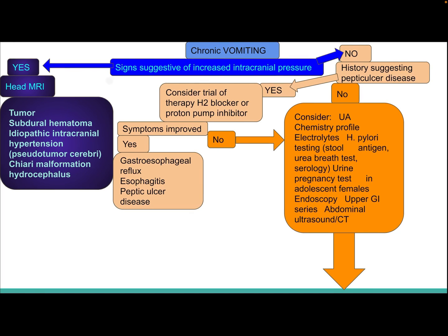For chronic vomiting, if there are signs or symptoms suggestive of increased intracranial pressure, perform head MRI. Differential diagnosis includes tumor, subdural hematoma, idiopathic intracranial hypertension, pseudotumor cerebri, Chiari malformation, and hydrocephalus.